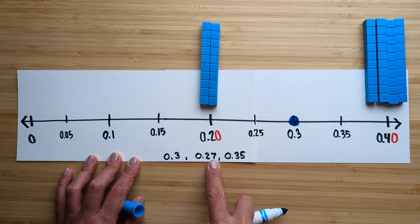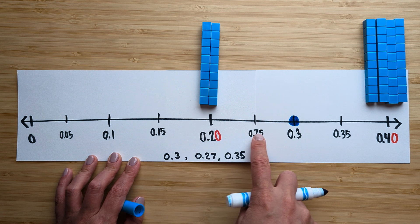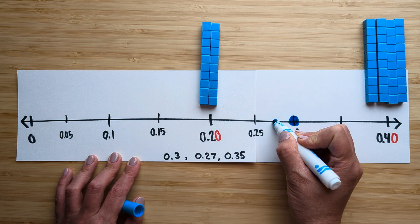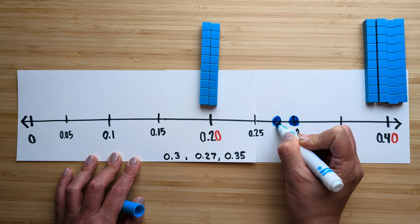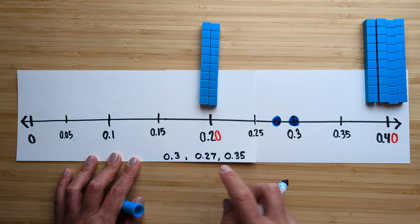Then I have twenty seven hundredths. Twenty, twenty five, twenty seven hundredths. Right about here. And I write it on top.